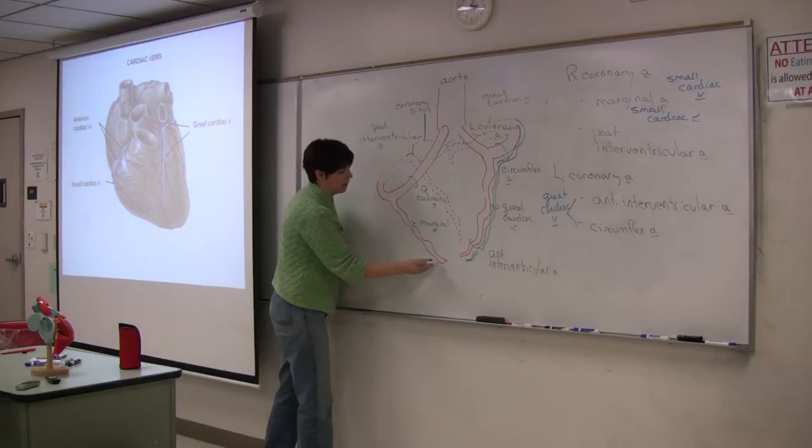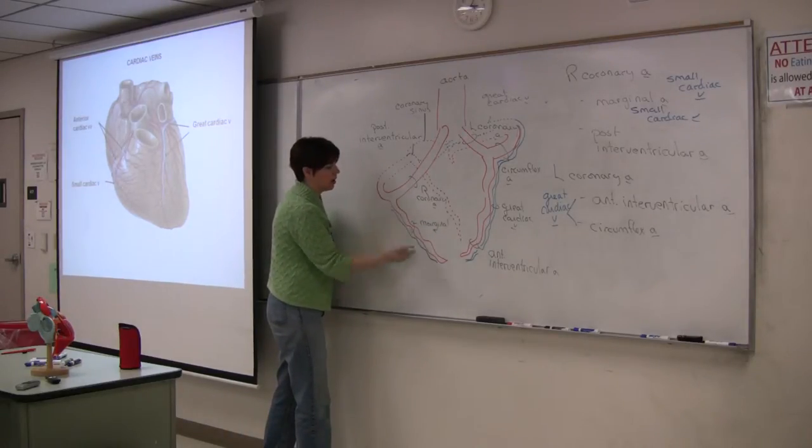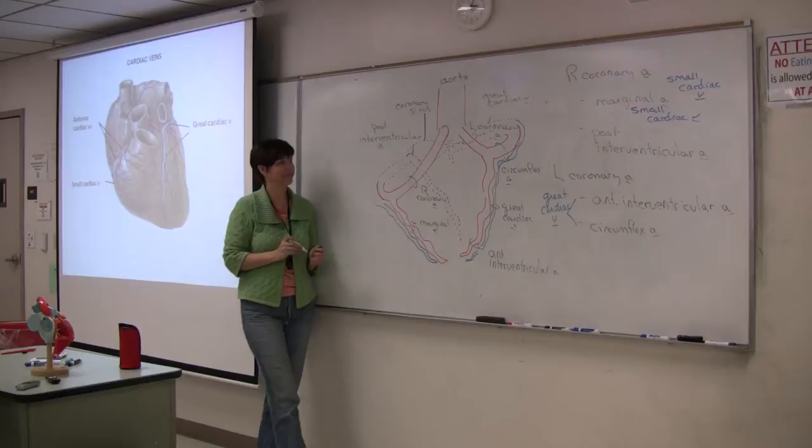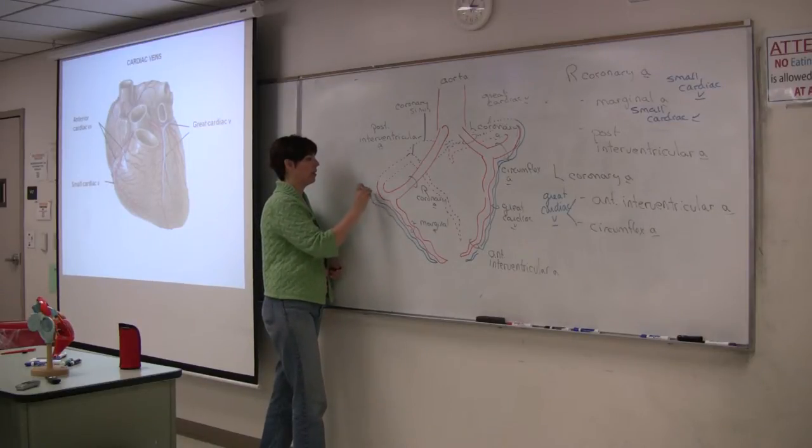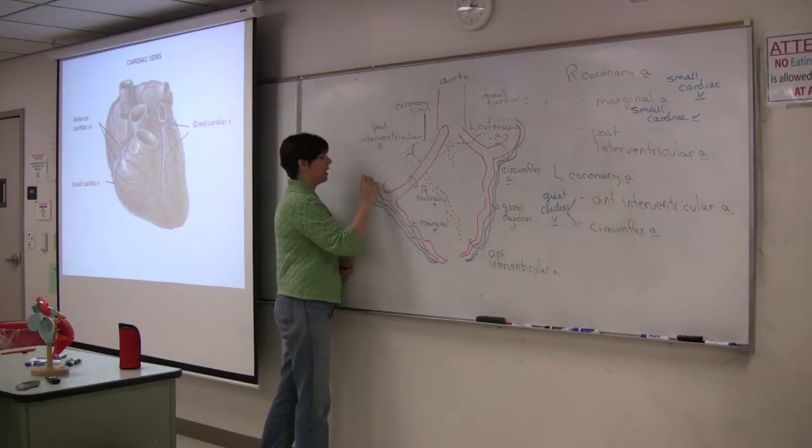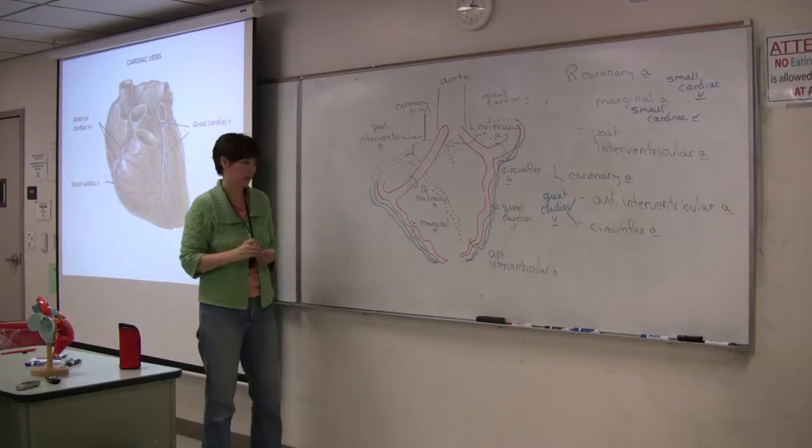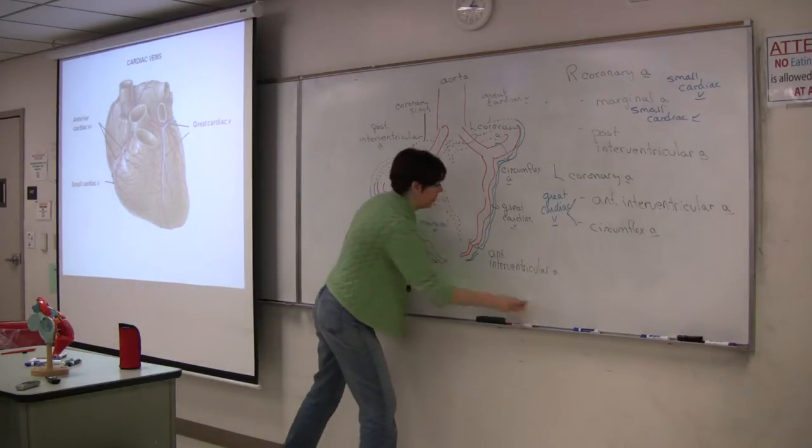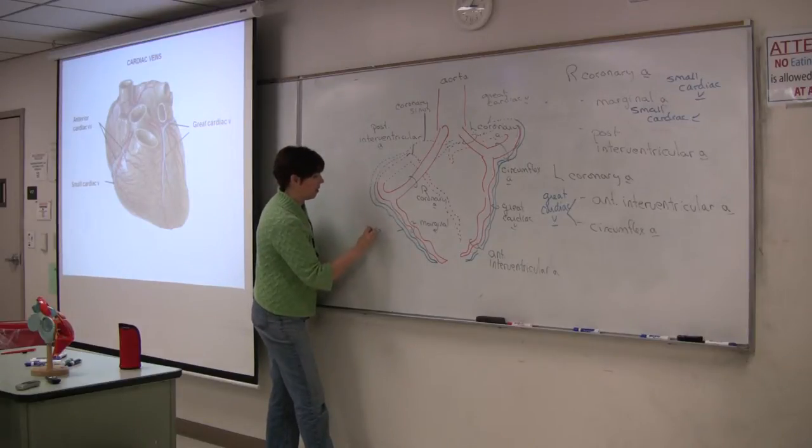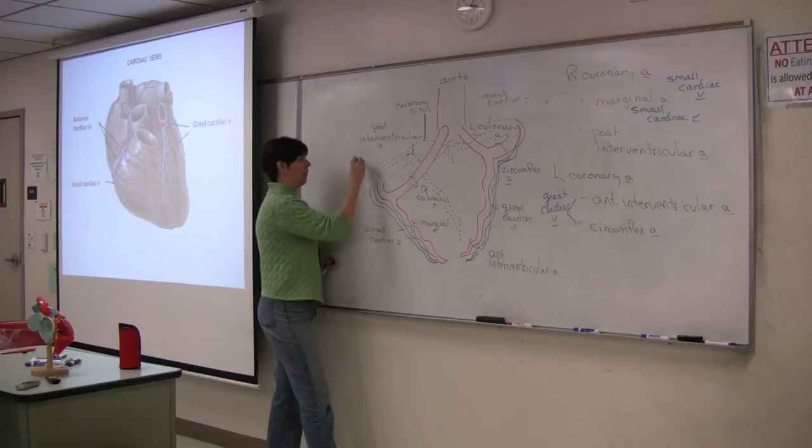All right. So here's the marginal artery, and we have our small cardiac vein. Now it reaches the coronary artery, and it's going to go posterior, and it's going to empty into the coronary sinus. So in both locations, it's identified as small cardiac vein.